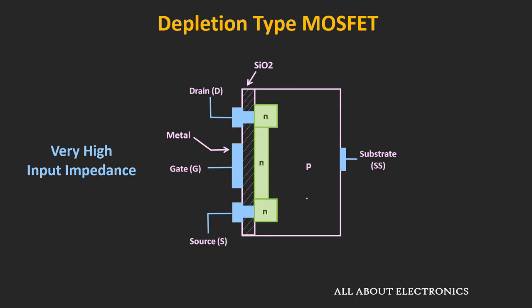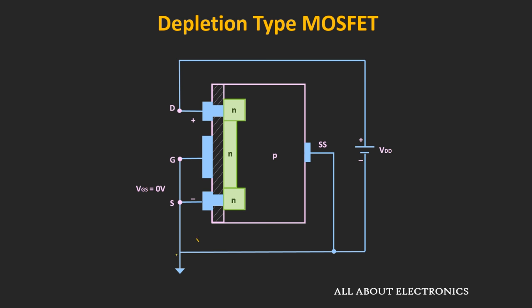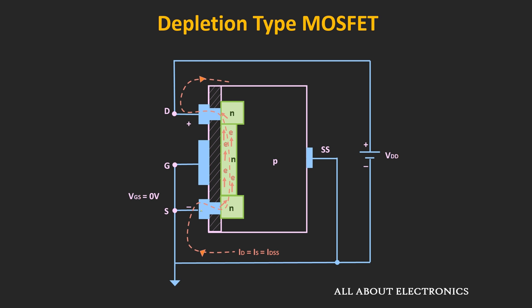Now let's see the working of this depletion type of MOSFET. Initially, let us assume that the gate and the source terminals are connected together and both are connected to the ground terminal. That means Vgs is equal to 0V. A positive voltage is applied between the drain and the source terminal. As soon as we apply this positive voltage, the electrons in the N-channel will get attracted towards the positive terminal. The electrons start moving from the source terminal towards the drain terminal, and in this way the current will be established in the N-channel.